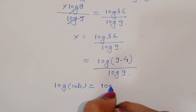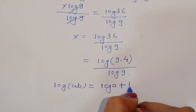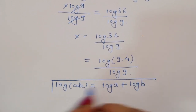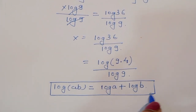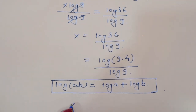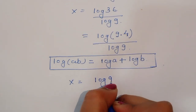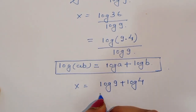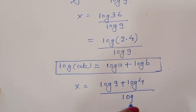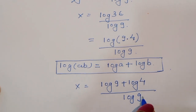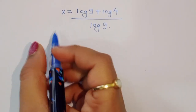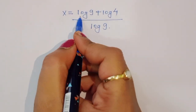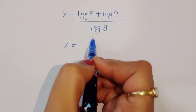We can write this using the formula log of a times b is equal to log of a plus log of b. Using this formula, we can write x is equal to log of 9 plus log of 4, divided by log of 9.